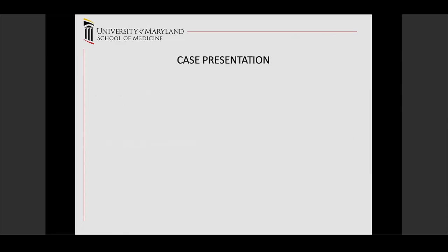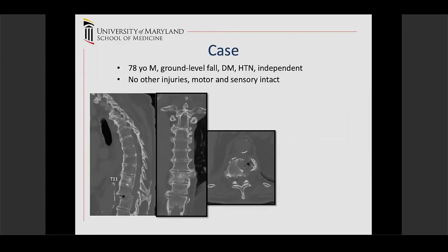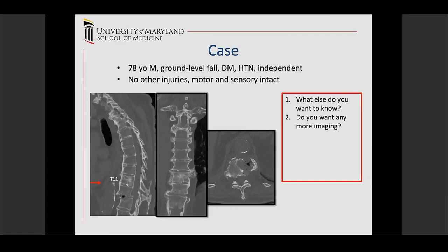I'll start with a case presentation. Here is a very typical case: a 77-year-old man presents to the emergency room after a ground-level fall. He has a history of diabetes and hypertension but has been living independently at home with no previous history of known spine disease. He comes in sensory intact with no other injuries, consistent with a low-energy mechanism. A CT scan is obtained showing a fracture at the T11-T12 level with significant subluxation, because these fractures go all the way through the spine and become unstable.